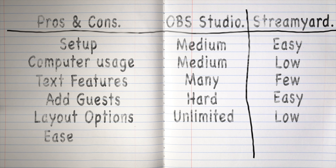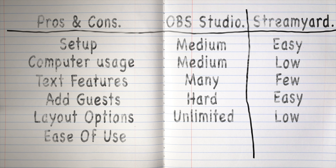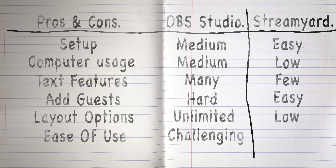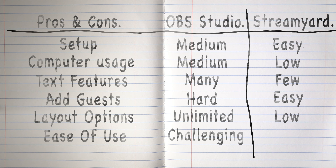Overall ease of use: OBS Studio is challenging to use. It has a bit of a learning curve, but once you learn it, it has nearly unlimited options. StreamYard is extremely easy to use — you can be set up and running in just a couple of minutes. The trade-off is it just doesn't have a lot of layout options, text options, or added features.